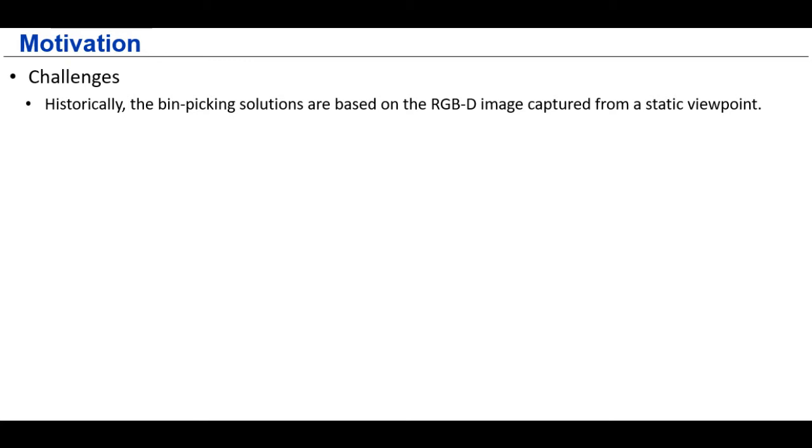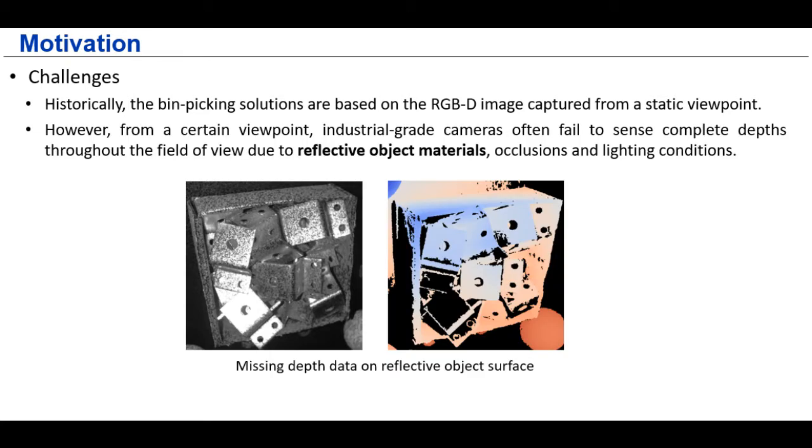Historically, for a bin picking system, the depth camera is generally mounted statically above the bin, which has big problems on the reflective objects. Because of the shiny surface, it often has a large amount of missing depth data, making the robot perception fail.